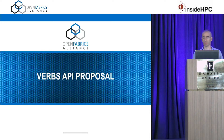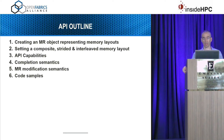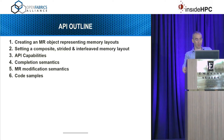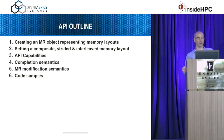Moving to the API: we want to adapt the existing IBV memory region verb object — which describes a memory region by key, address, and length — to also encompass non-virtually-contiguous memory. It will support the three types: composite, strided, and interleaved. We'll add capability APIs so each hardware vendor can report what it supports, define completion semantics for such registration, explain how to update a memory registration, and show a short code example.